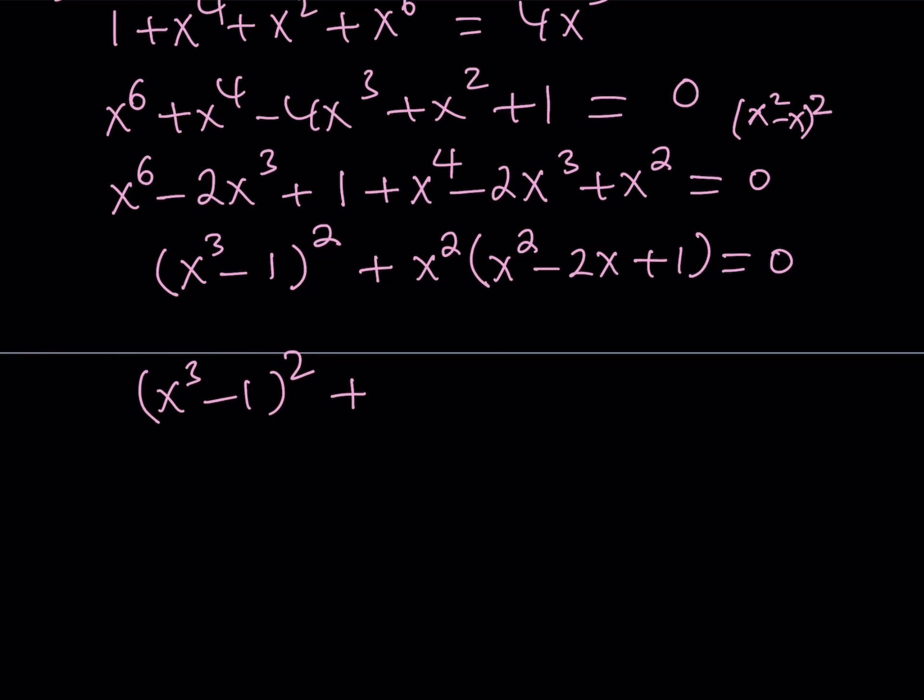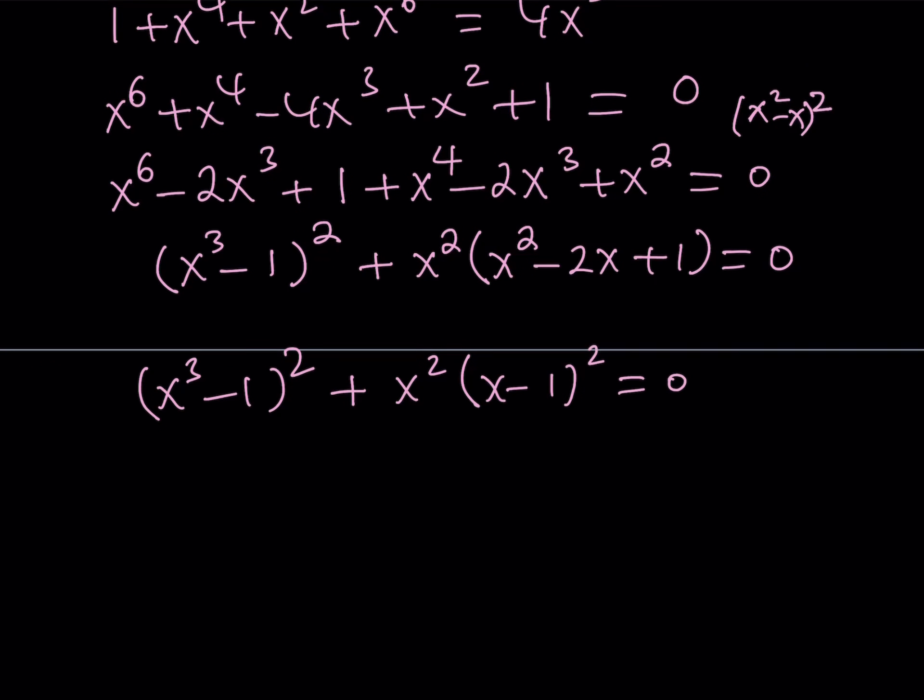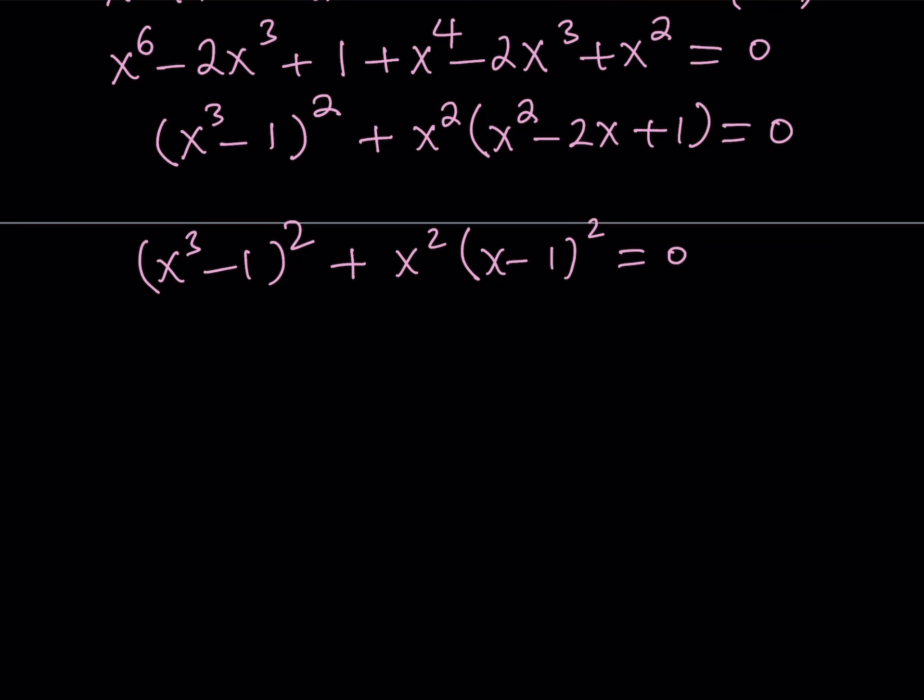Or you could write it directly as x squared times x minus 1 squared as well. If you see what that looks like, then you could write that too. But in this case, I have the x squared multiplied by x minus 1 quantity squared, which is going to turn out to be the same thing. Now, at this point, I don't really have to distribute the x squared. I can just try to solve this equation. What am I supposed to be looking at? Well, x squared times x minus 1 squared is a perfect square. And x cubed minus 1 squared is another perfect square. So, we're adding two squares, and the result is 0.